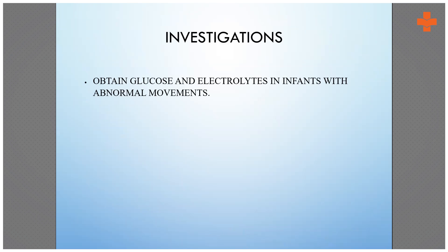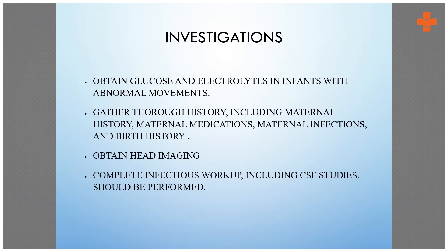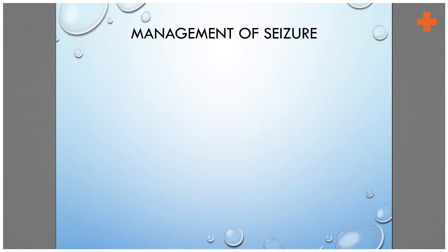Rule out whether the baby has metabolic abnormalities of maternal or metabolic origin. If metabolic causes are found, treat accordingly — treat hypoglycemia, treat hypocalcemia. If there is a history of trauma, get a CT scan or cranial ultrasound done as an emergency. Also review maternal history, maternal medications, maternal infection, and birth history. Infectious workup and CSF studies should be performed. Urine and meconium toxicology screens should also be done.